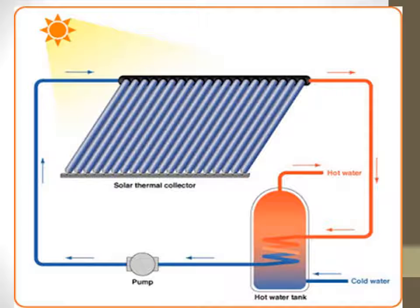Here is a small example diagram. The blue panel is the solar thermal collector. Then the hot water tank receives the supply. A pump keeps the water in circulation.